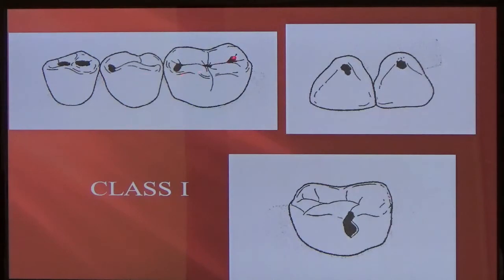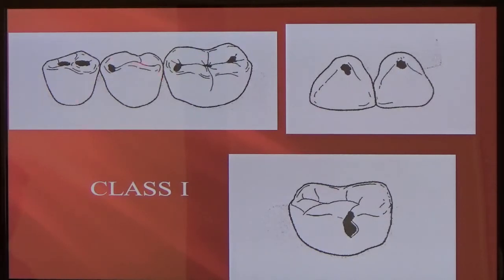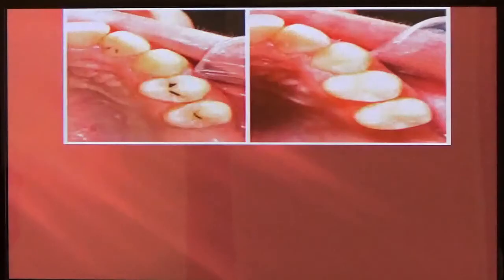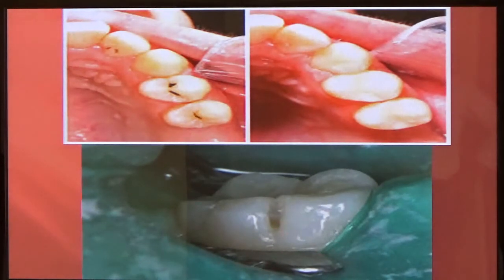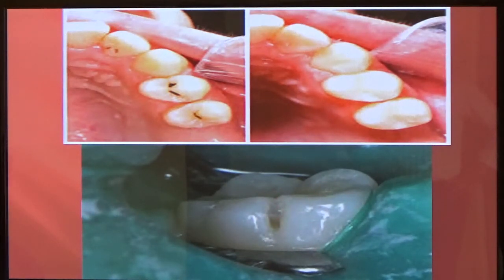Here's class 1 — these are the occlusal surface of back teeth. Here's the lingual pit of the incisors, and here's a buccal pit, class 1. The most common one is the occlusal surface of premolars and molars. Clinically, this is what class 1 cavities look like — here they are on the lingual surface of the cingulum on an anterior tooth, and there they are restored. Here it is on the buccal of the lower molar — a class 1 buccal restoration.